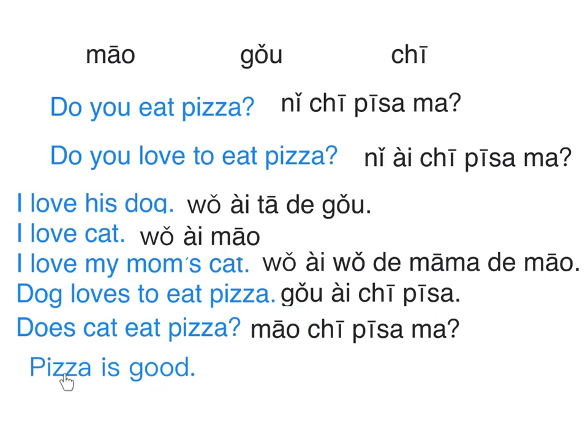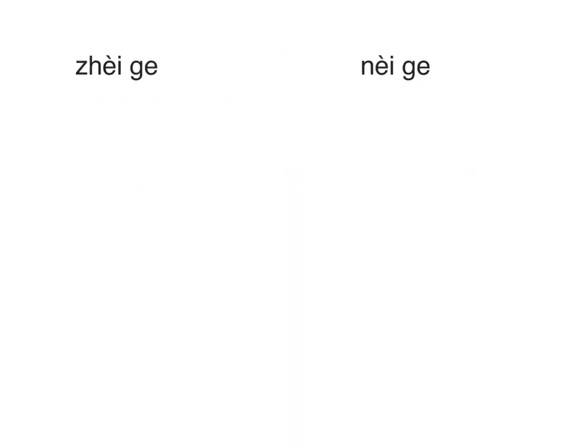How would you say 'pizza is good'? For something being good, we say 披萨好 — we don't need to say 'is'. Let's learn a very useful word: 这个, which means 'this one'. If you don't know other words, you can point at things and say 这个。 How to say 'I love to eat this one': 我爱吃这个。